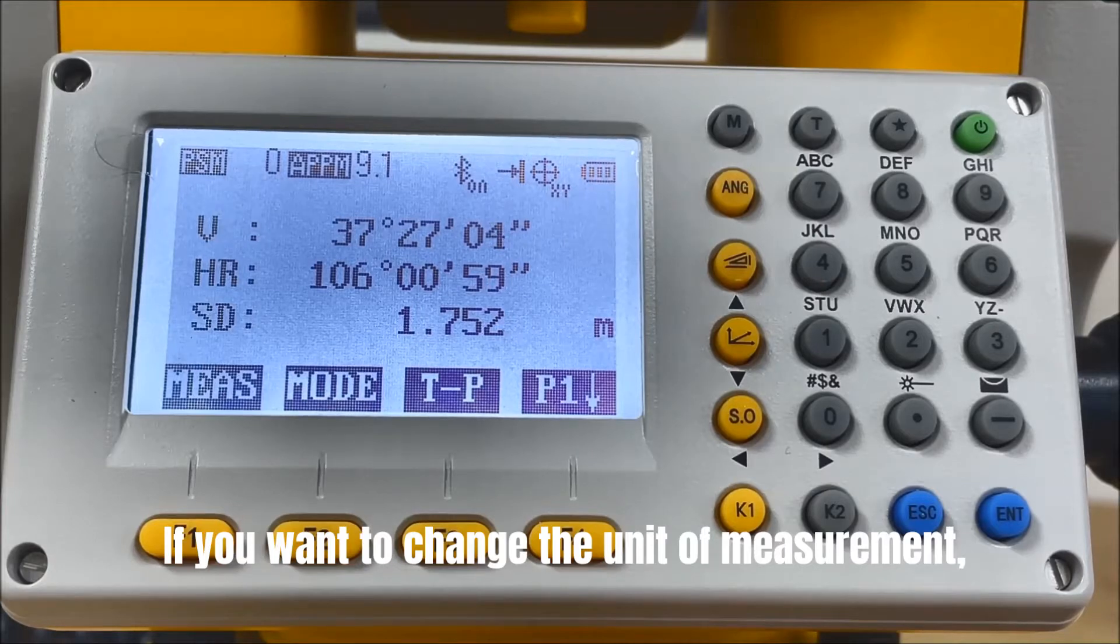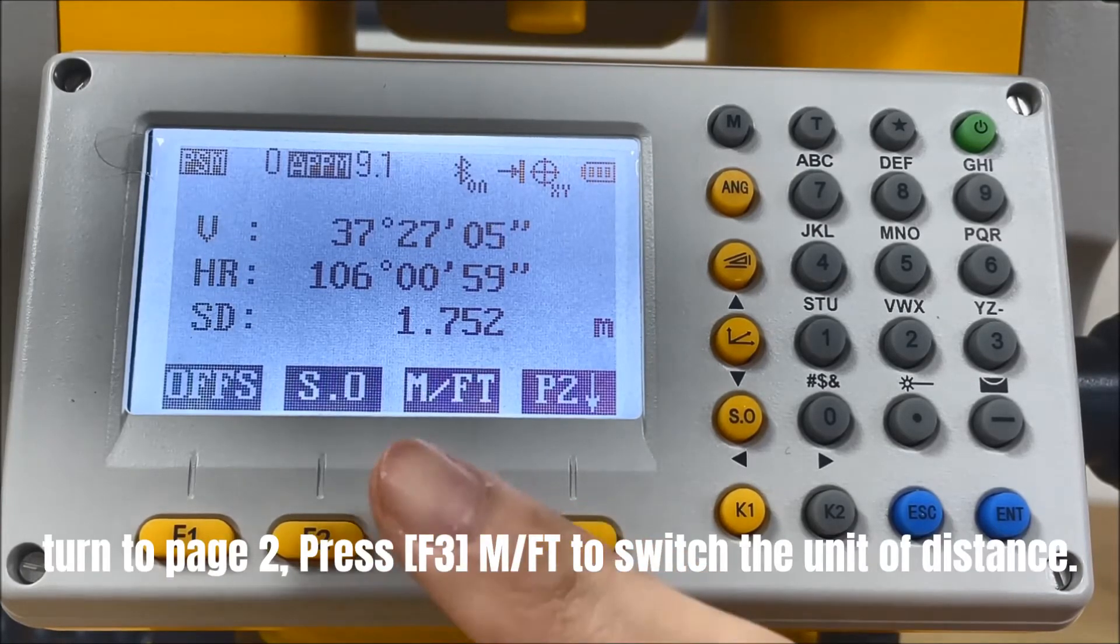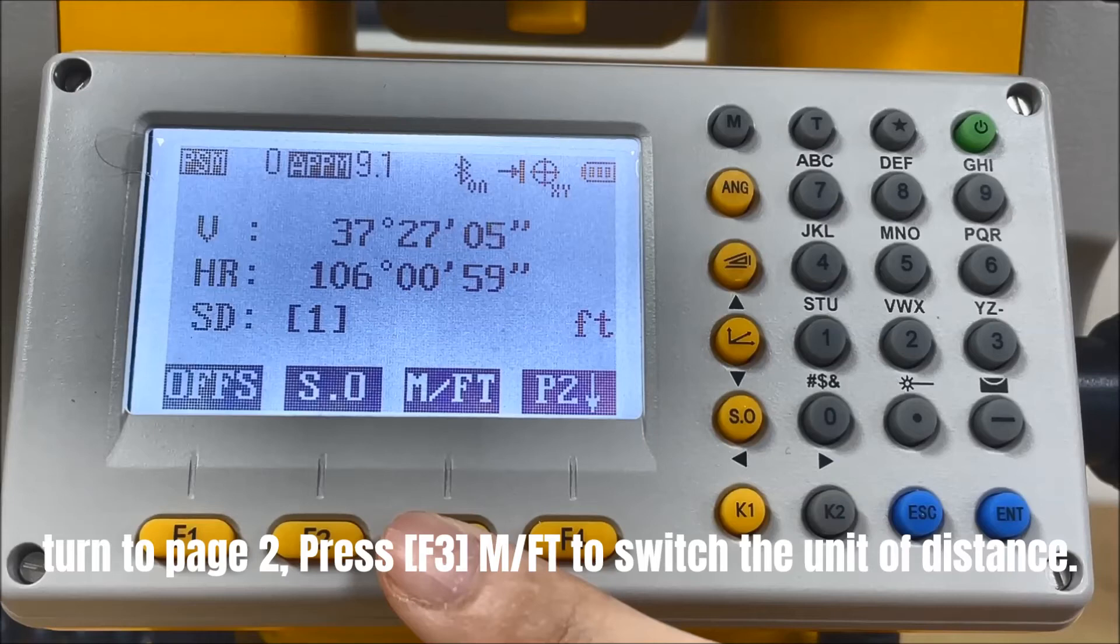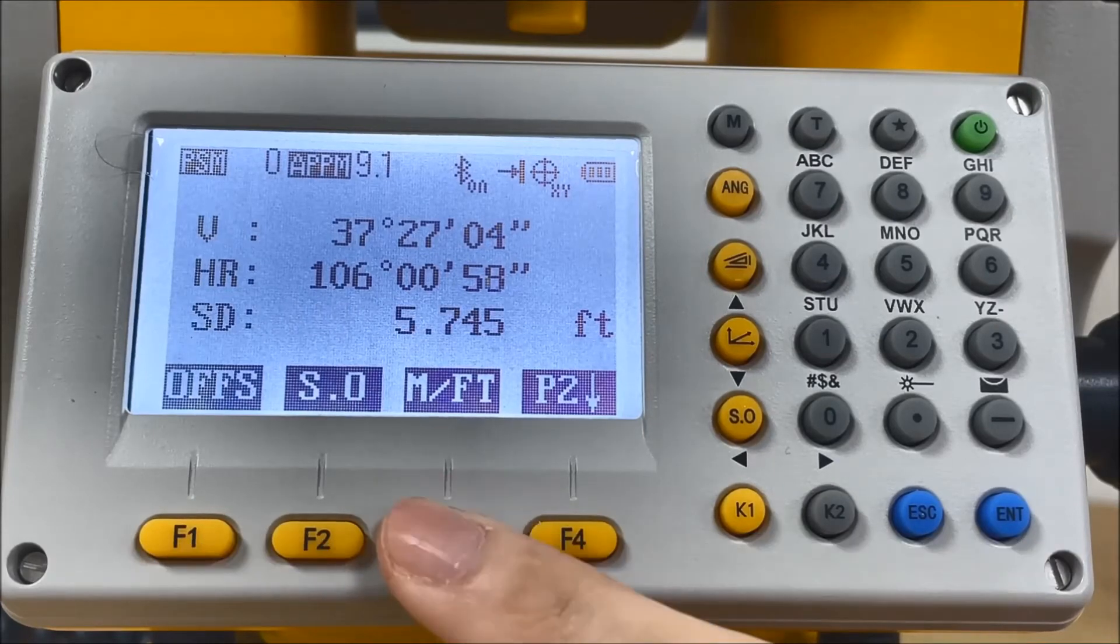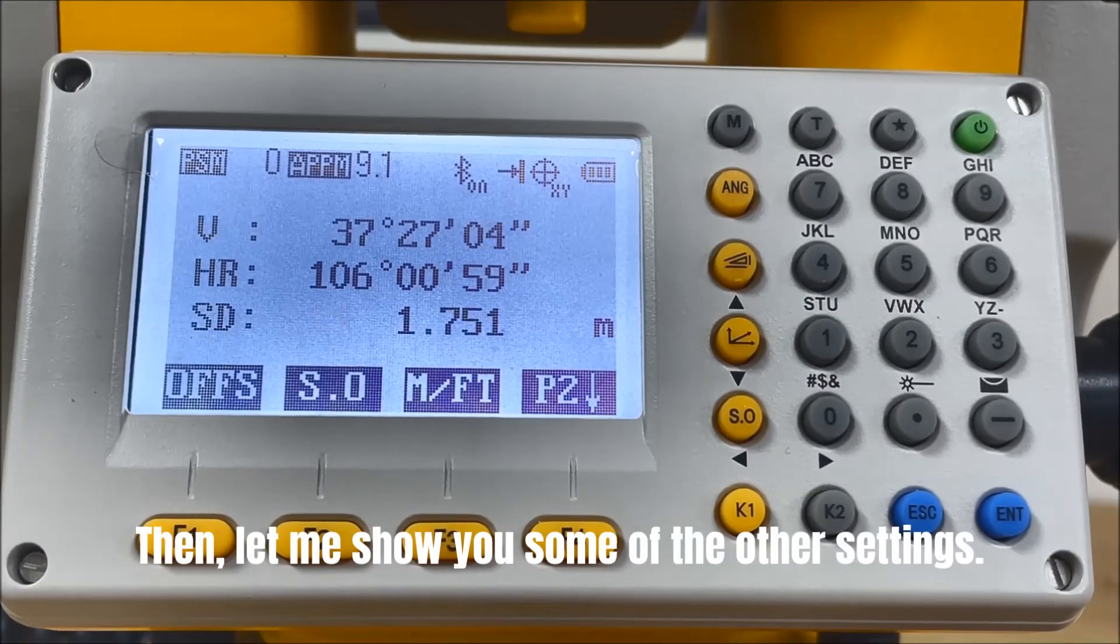If you want to change the unit of measurement, turn to page 2 and press F3 M/FT to switch the unit of distance. Then, let me show you some of the other settings.